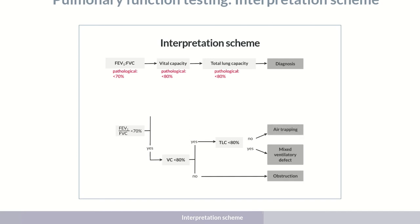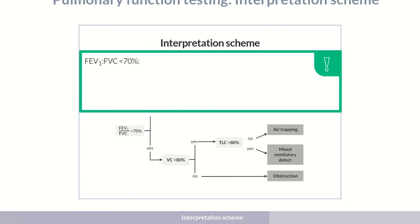So, in summary, a reduced FEV1 to FVC ratio can have three different causes. Together with a normal vital capacity, the cause is obstruction. With a reduced vital capacity and total lung capacity, a mixed ventilatory defect is present. And with a reduced vital capacity and normal total lung volume, the cause is hyperinflation.